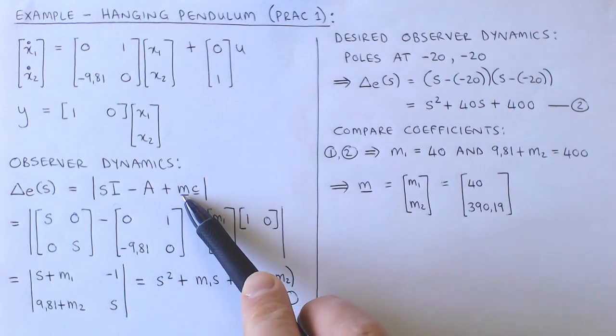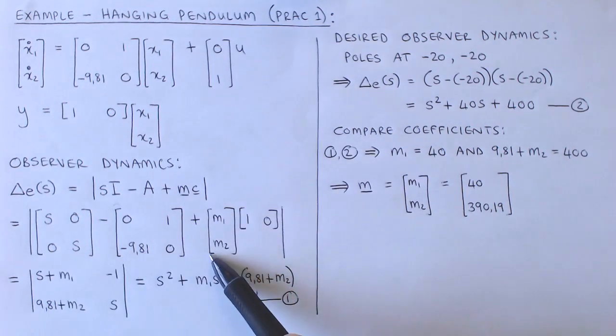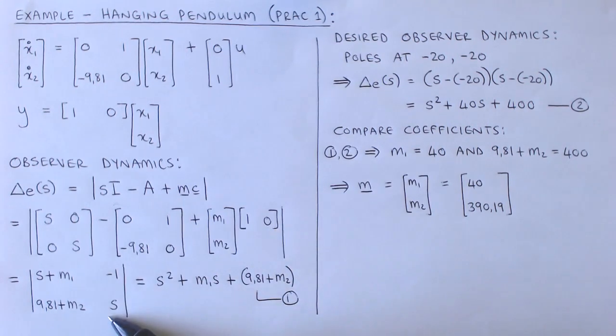The characteristic polynomial is given by the determinant of SI minus A plus M times C, which results in the determinant of this matrix. After calculating the determinant, we obtain this polynomial where the coefficients are written in terms of the elements of the observer gain vector M.